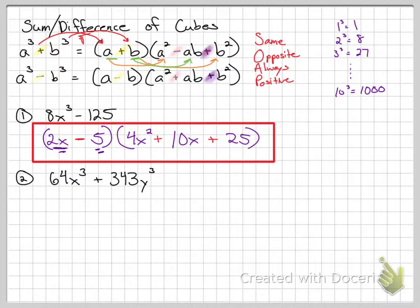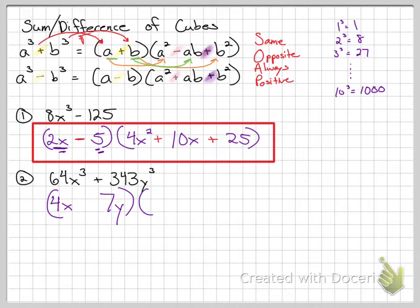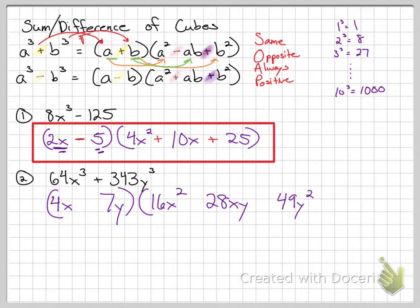For number two: 64x³ + 343y³. The cube root of 64 is 4, cube root of x³ is x — giving 4x. And 343 is 7³, so cube root of 343y³ is 7y. First factor: (4x + 7y). Second parenthesis: (4x)² = 16x², 4x times 7y = 28xy (the middle), and (7y)² = 49y². Using SOAP with plus: Same = plus, Opposite = minus, Always Positive = plus. Answer: (4x + 7y)(16x² − 28xy + 49y²).